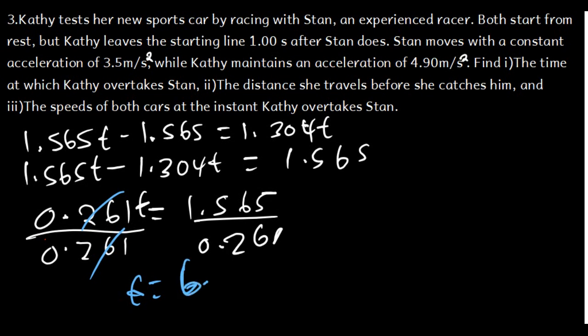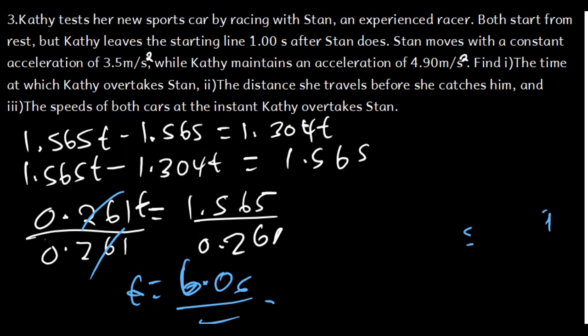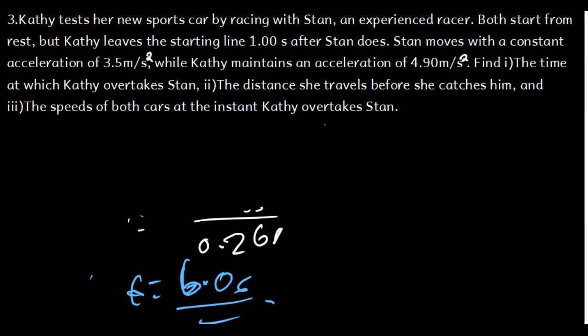The result of 5.999 rounds to 6.0 seconds, with the small discrepancy due to rounding during intermediate steps. If you carry the full values without rounding, you get a result very close to 6. So the time at which Kathy overtakes Sten is T = 6.0 seconds. You can also use the quadratic equation approach and get the same answer.